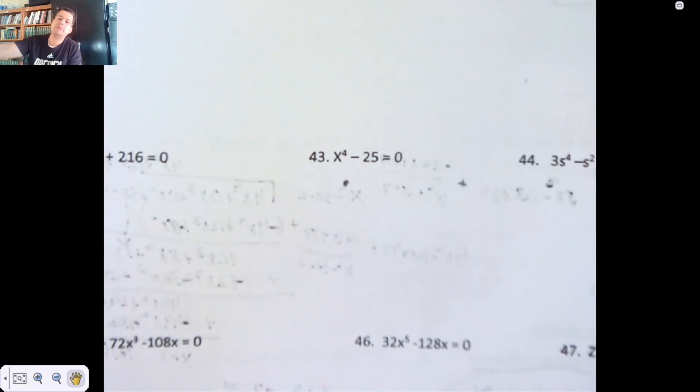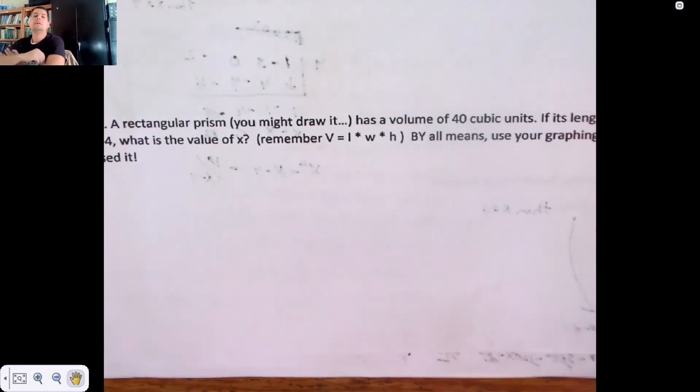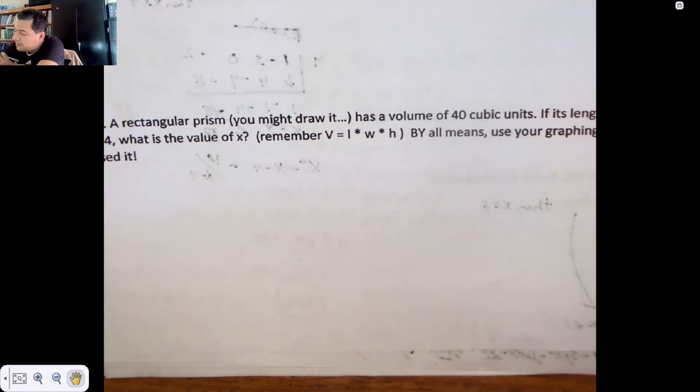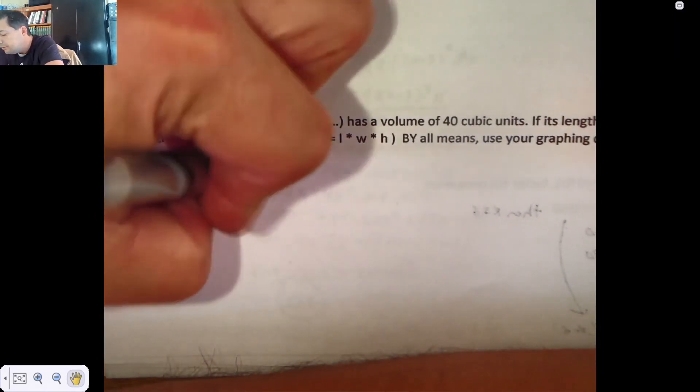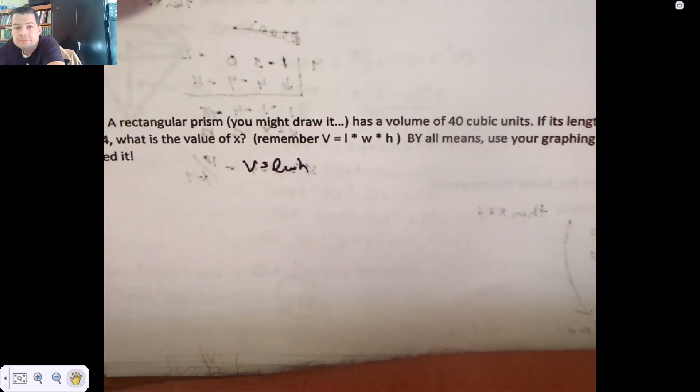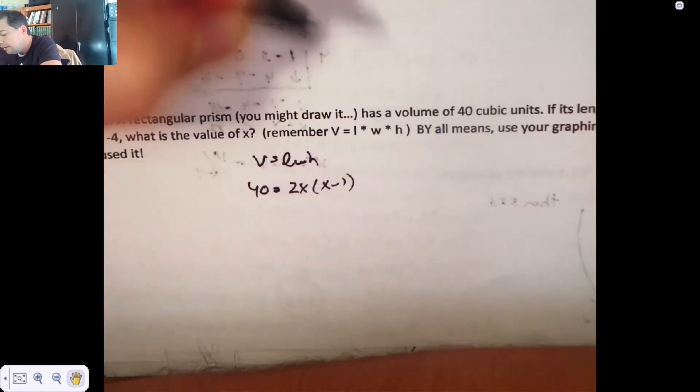I'm going to do one more. The rest of this stuff is all really easy. Everything before this one is really easy stuff. It doesn't take too long. This is probably the last semi-difficult problem. Rectangular prism has a volume of 40 cubic units. If its length is 2x, its width is x minus 1, and its height is x minus 4, what is the value of x? I don't think this thing works out nicely. It says by all means use your graphing calculator. I'm going to play with it for a while and see if I can get anywhere with it because I've got time to kill. So, volume is length, width, height for a prism. I know the volume is 40. The length is twice x. The width is x minus 1. And the height is x minus 4.